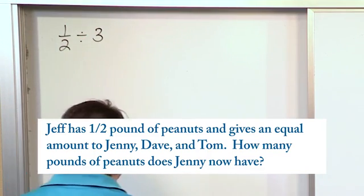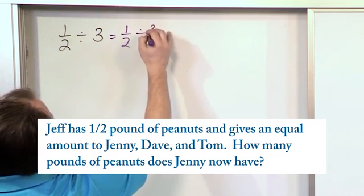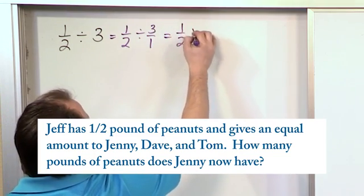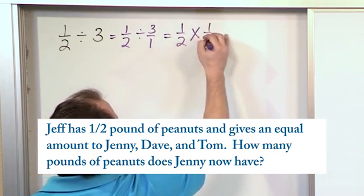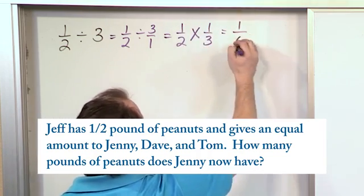Now we've done this kind of problem many times before. First thing we do is we keep the division symbol, but we write this as three over one. Then we change this to multiplication and we flip this over. Then we multiply the top. So one times one is one. Two times three is six.